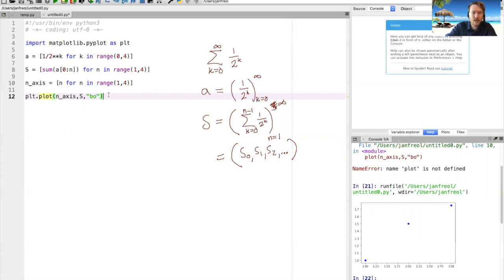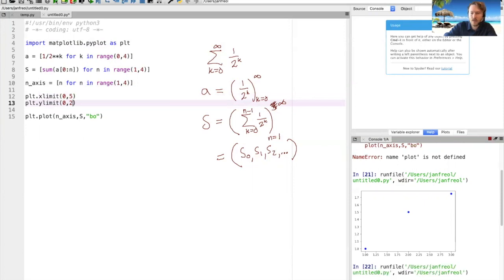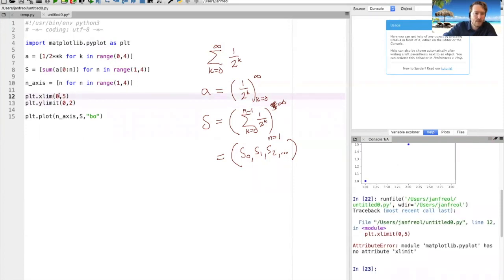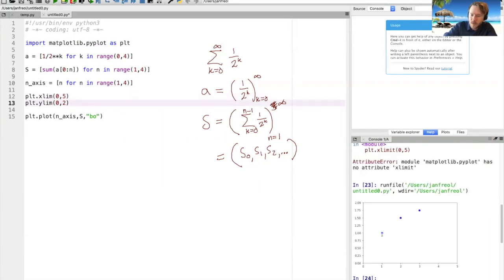If I want I can write here plt.xlim, let's go from zero to five, plt.ylim from zero to two. It's not called 'limit' but it's called 'lim'. Now it runs like this and you can see this is if I do four partial sums.